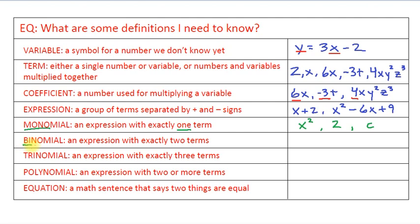Binomial. Bi, like bicycle, that stands for 2. So an expression with exactly 2 terms. In this case, a good example would be x squared plus 6x. You can see here, you've got 2 terms that are connected with a plus or a minus sign. That is a binomial, meaning 2.